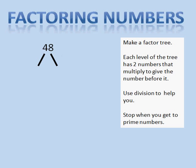So 48, I need to divide that, because it says use division to help figure out what two numbers can I multiply to get 48. I'm going to use 2 and 24. Now, are those the only two numbers that I can multiply to get 48? Of course not. But I like to use prime numbers. And I know if I have an even number, I can always divide it by 2. So that's what I'm going to do.